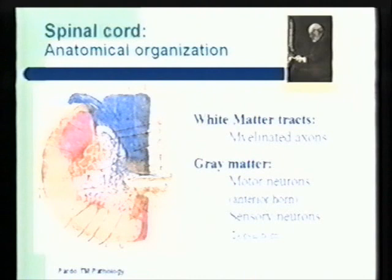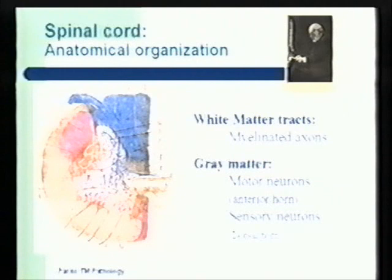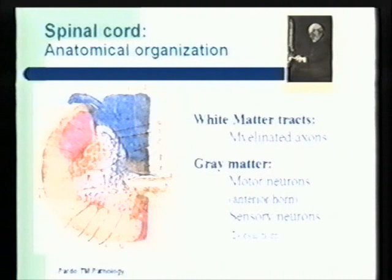The gray matter of the spinal cord has two major areas: the anterior horn, which contains many of the motor neurons, and the dorsal horns, which contain many of the sensory neurons. This anatomy is very important because transverse myelitis can affect the spinal cord either in focal areas or in the entire spinal cord. If it affects only one portion, that will determine what type of clinical problems you are going to have.